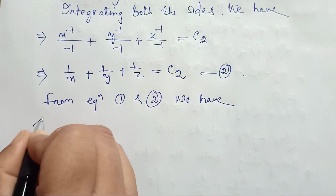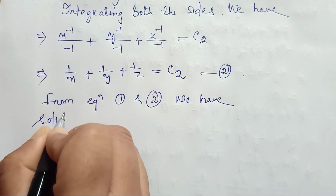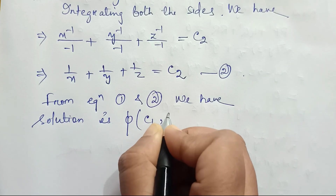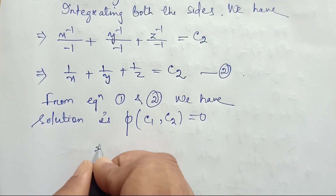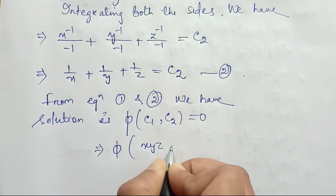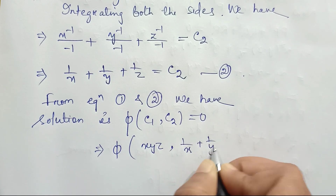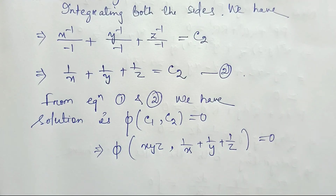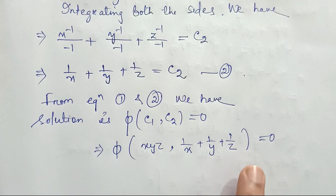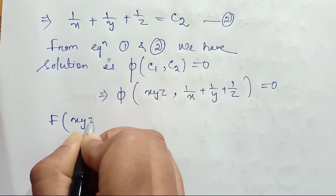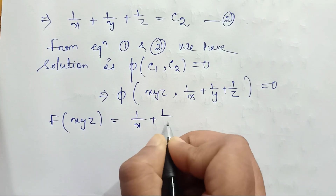From equations 1 and 2, the general solution is φ(c₁, c₂) = 0, that is φ(xyz, 1/x + 1/y + 1/z) = 0. We can also write this as f(xyz) = 1/x + 1/y + 1/z.